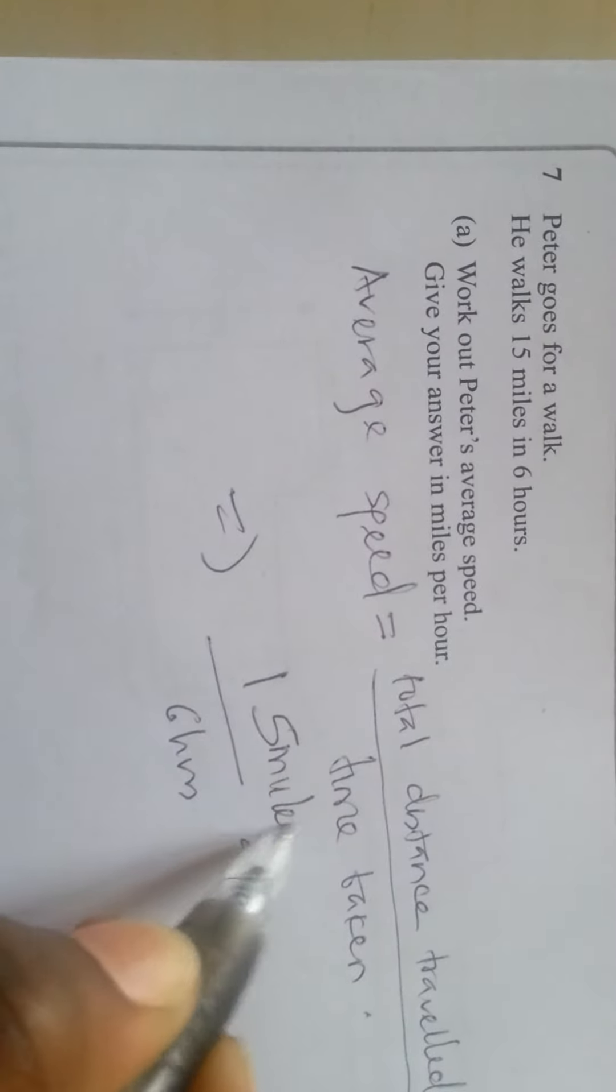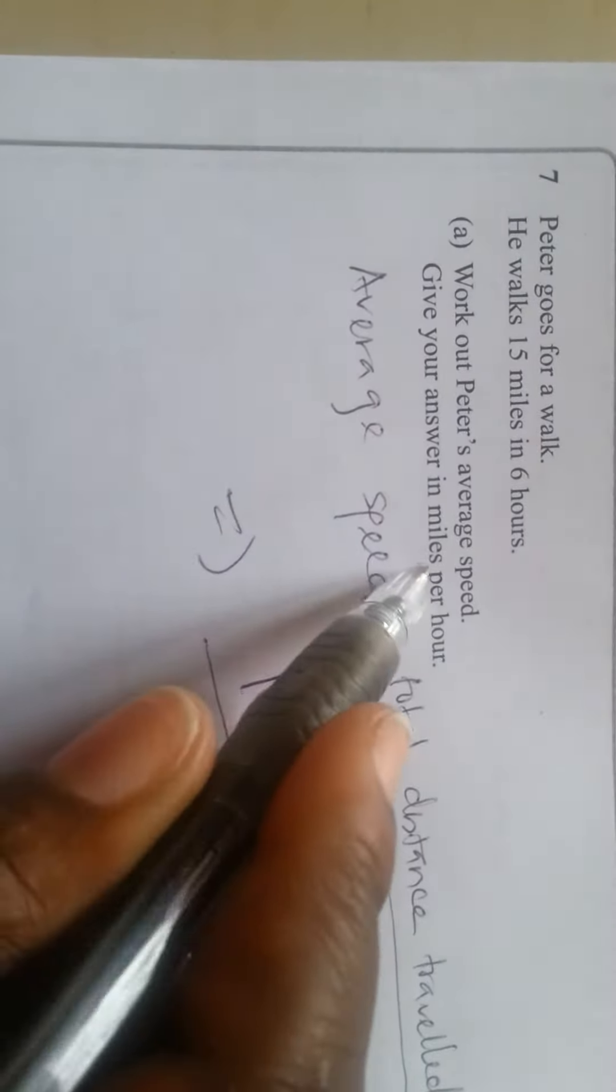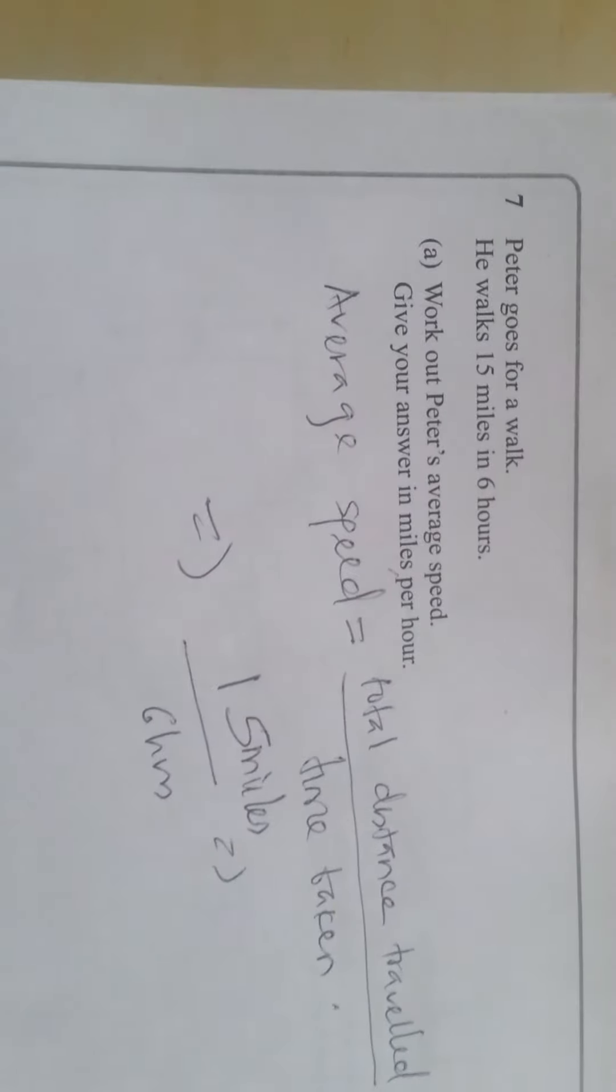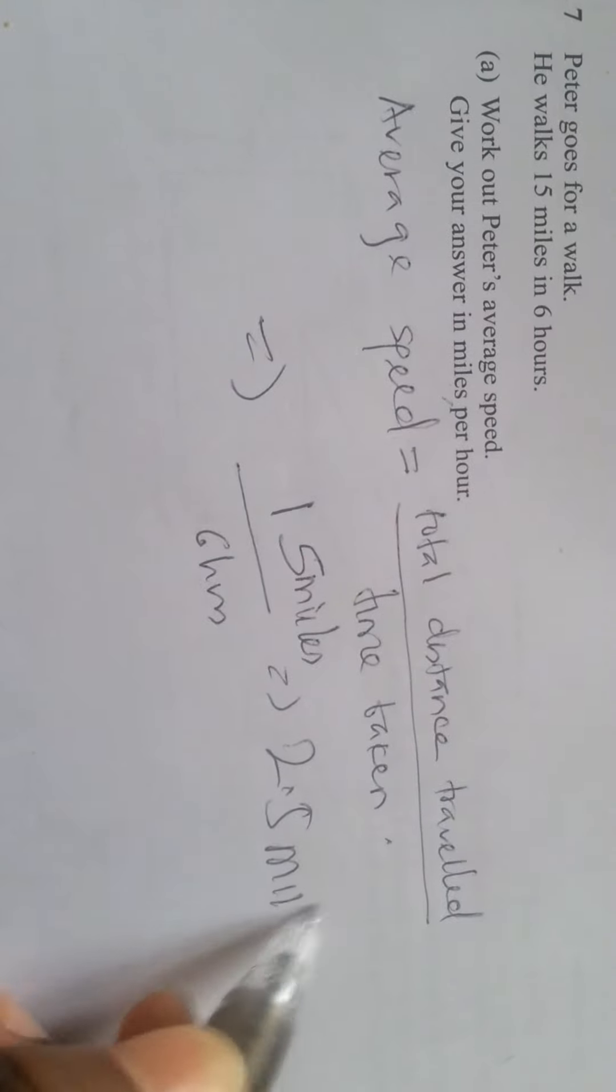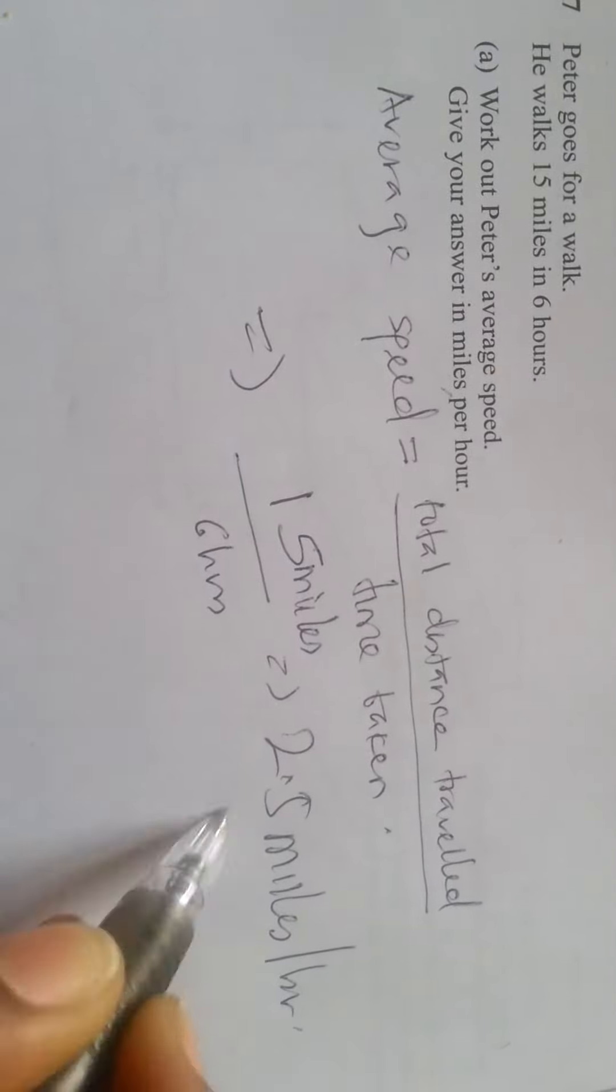We are leaving it that way because we are told to represent it in miles per hour. So we have 15 divided by 6 and that will be 2.5 miles per hour.